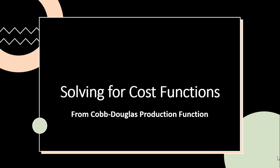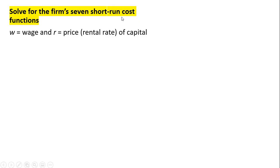Hello, in this video we're going to solve for the firm's short-run cost functions from a generalized Cobb-Douglas production function. We're going to solve for the firm's seven short-run cost functions. We're going to let W equal the wage, R equals the price of capital, or the rental rate of capital. Here is our generalized Cobb-Douglas production function.